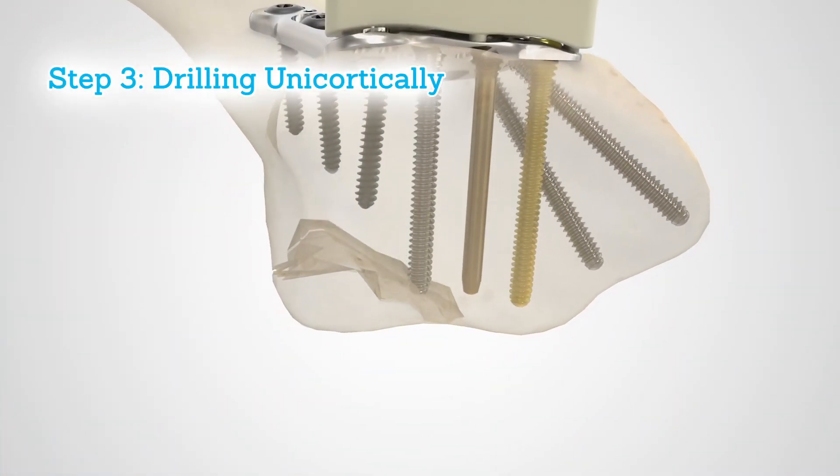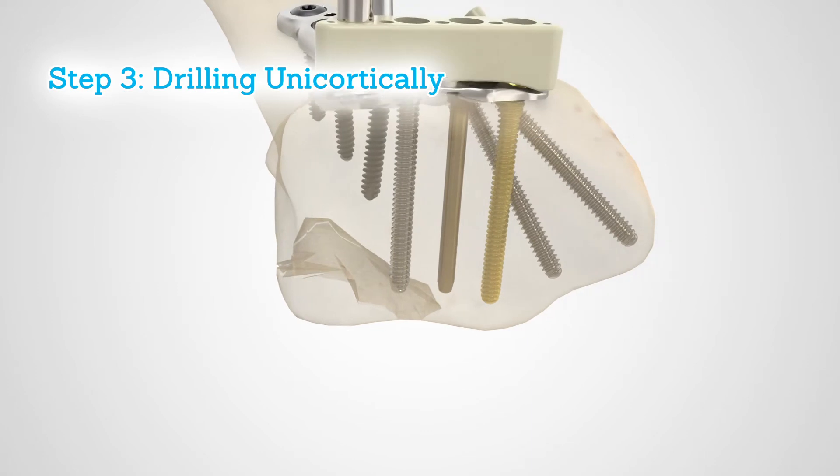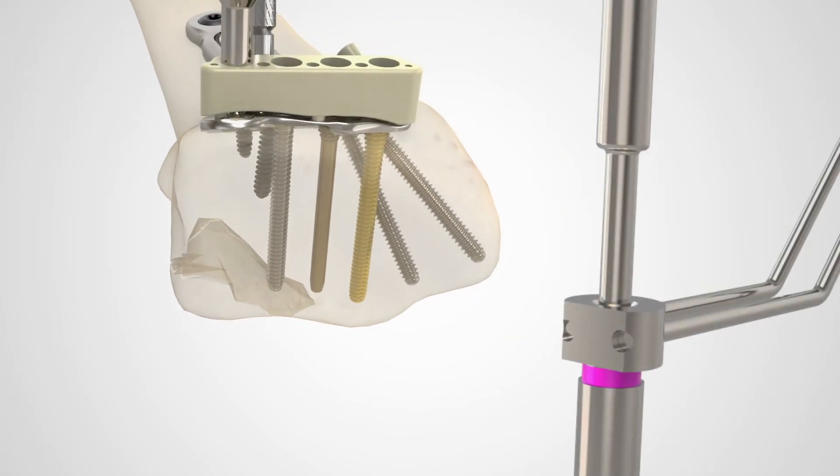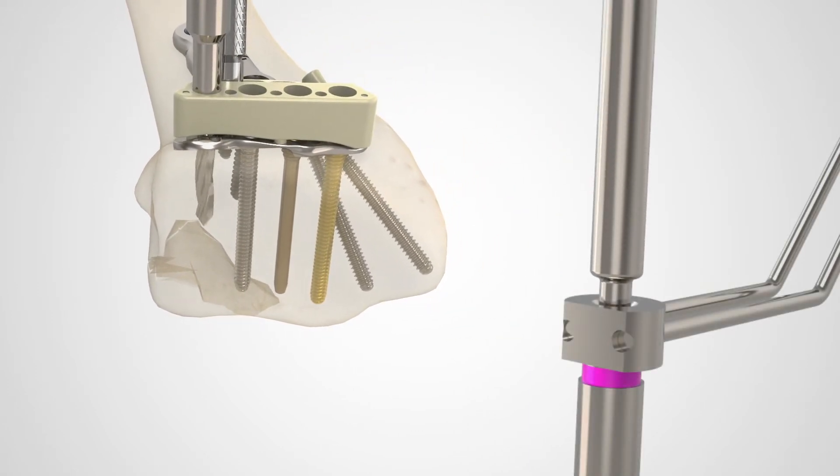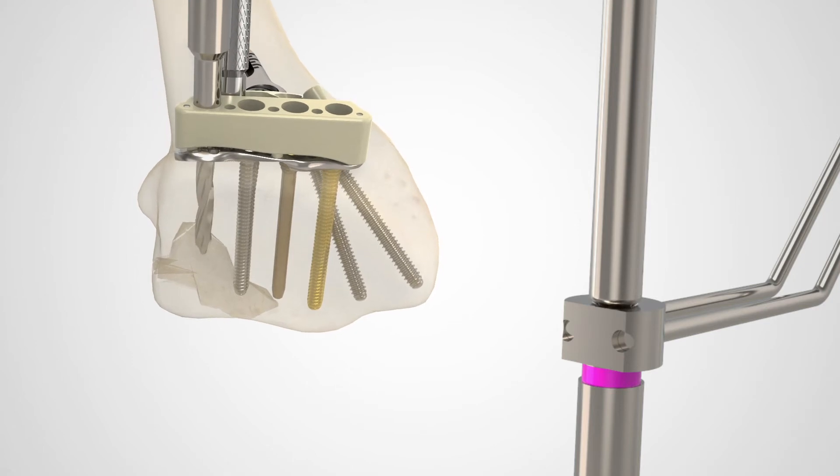Drill unicortically with the 2.5 millimeter FragLock drill. The shoulder of the drill must stop against the top of the FragLock 2.5 millimeter drill guide.